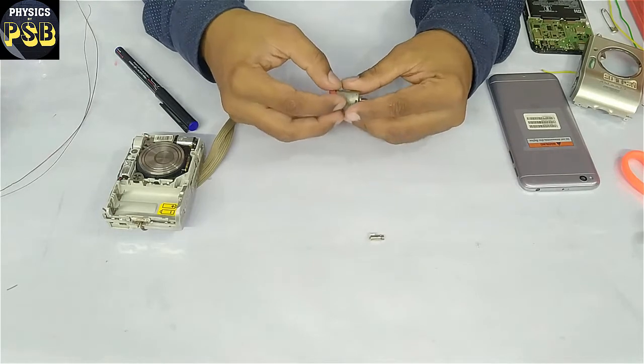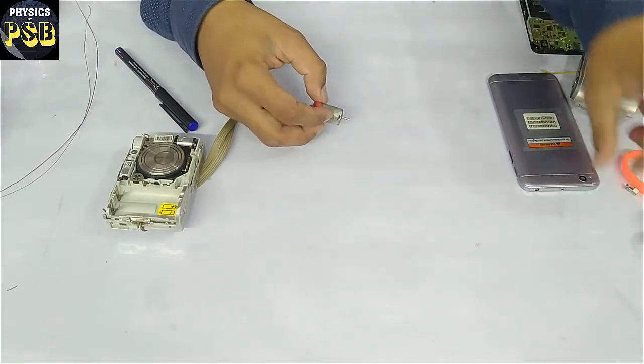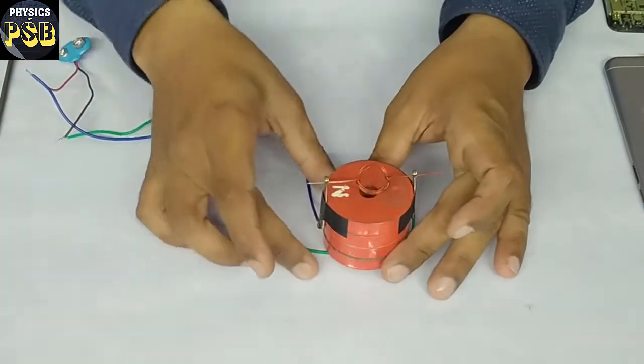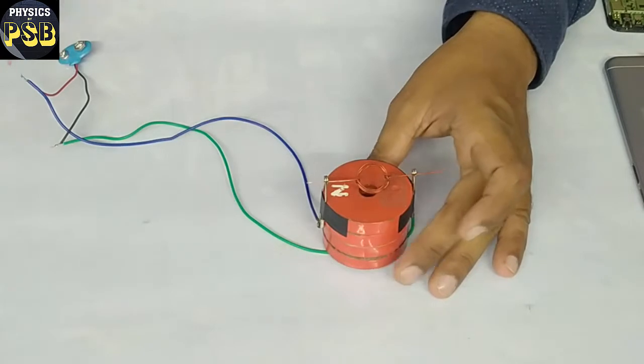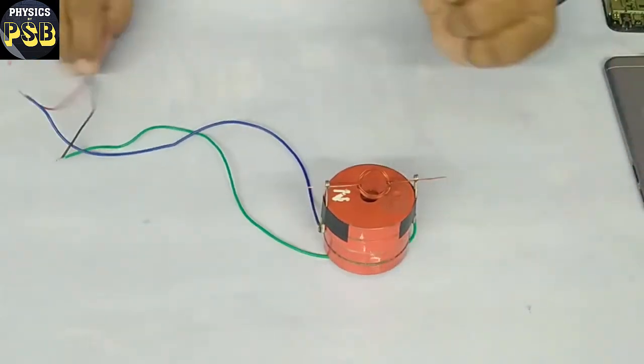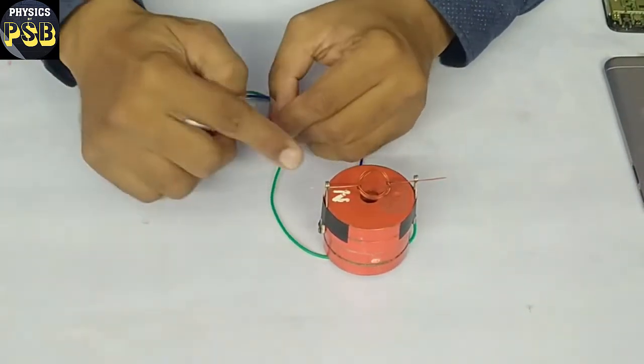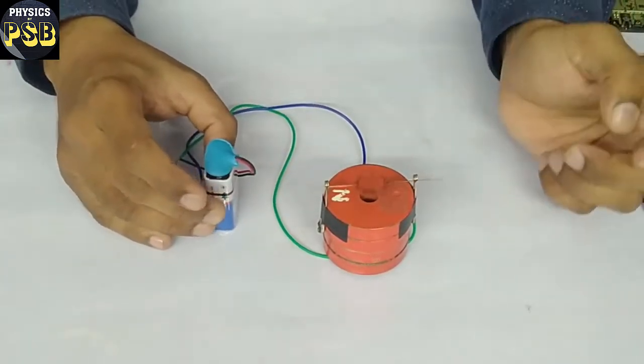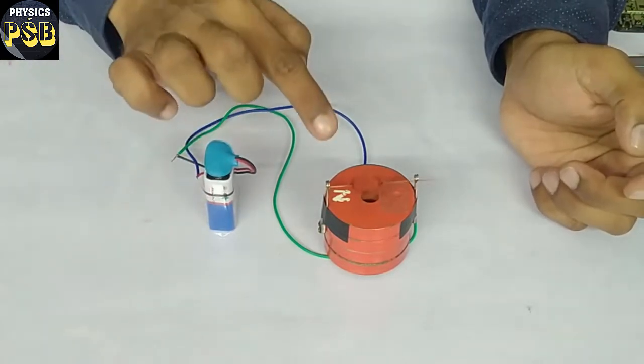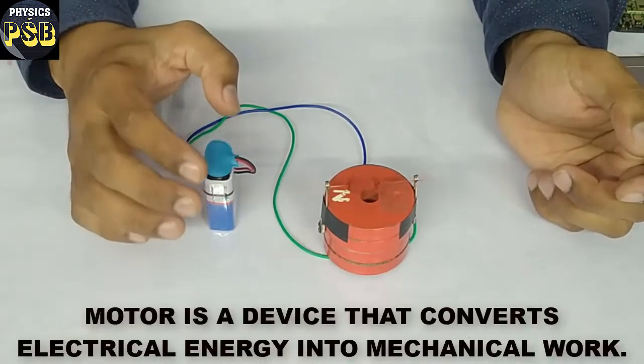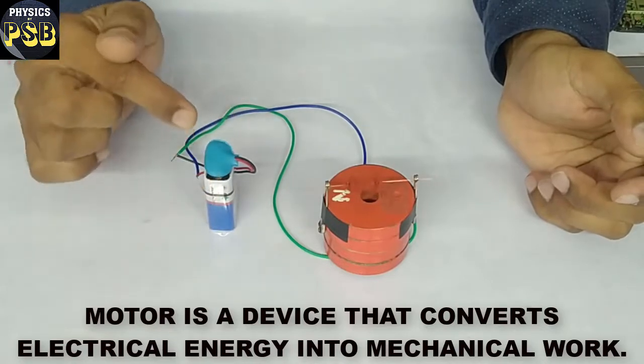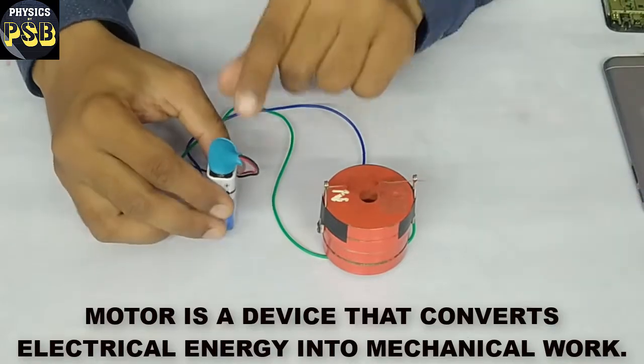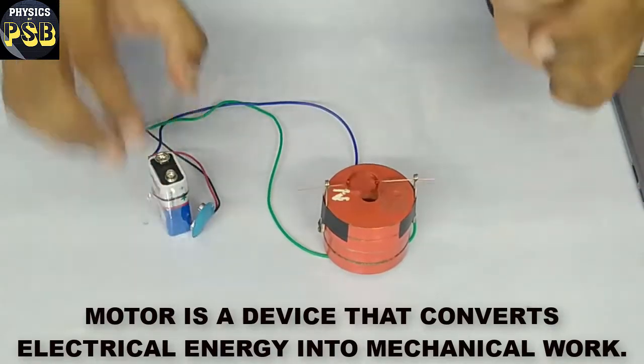I'll make a small motor to explain how it works. Here I have a simple motor made using easily available materials at home. Now I will connect this to a 9-volt battery. As you see, the moment I connected this to a 9-volt battery it has started rotating. A motor is a device that converts electrical energy into mechanical work.